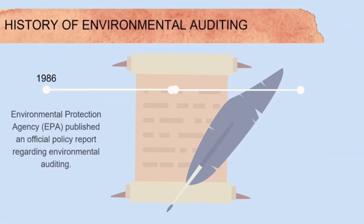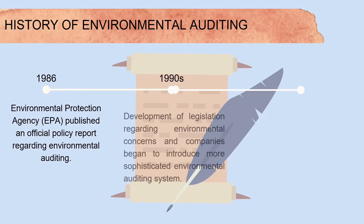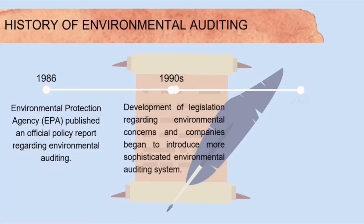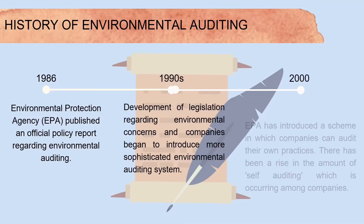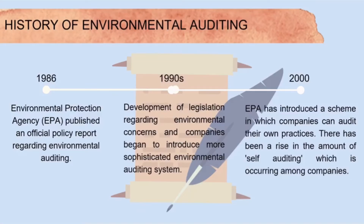In 1986, the Environmental Protection Agency published an official policy report regarding environmental auditing. In the 1990s, development of legislation regarding environmental concerns led companies to introduce more sophisticated environmental auditing systems. In 2020, the EPA introduced a scheme in which companies can audit their own practices, and there has been a rise in the amount of self-auditing occurring among companies.